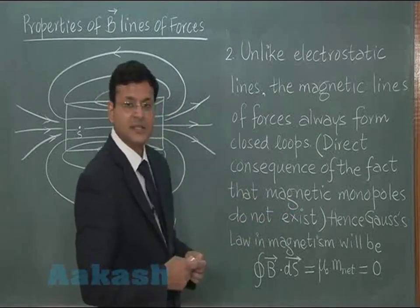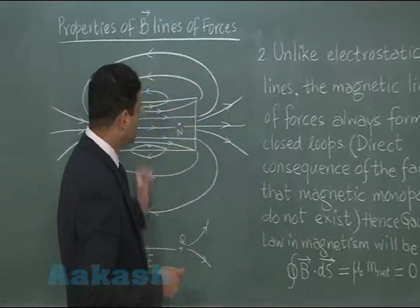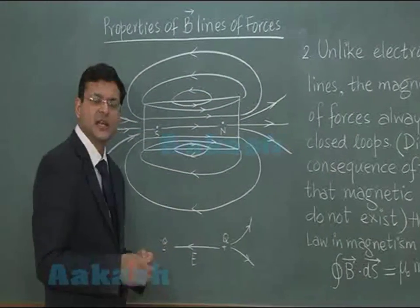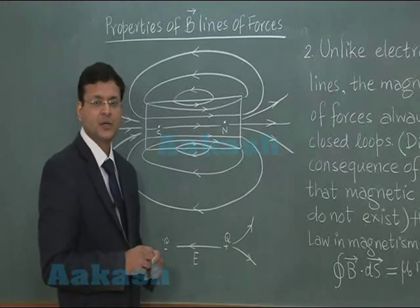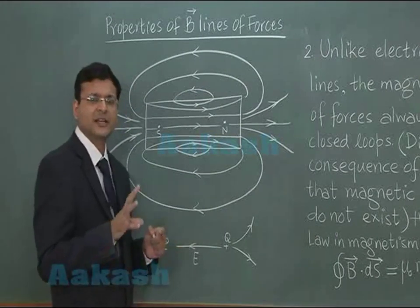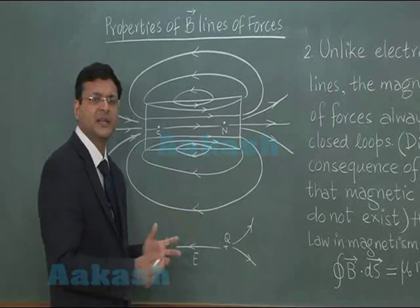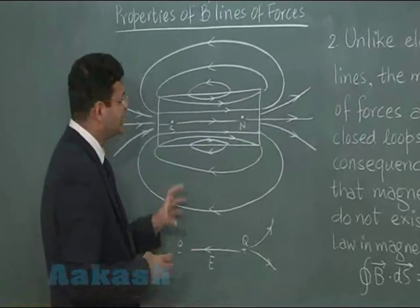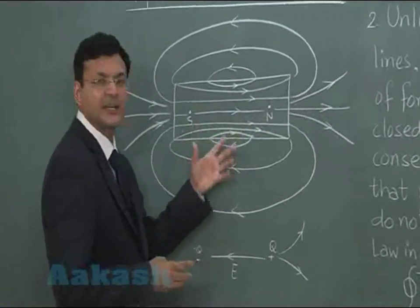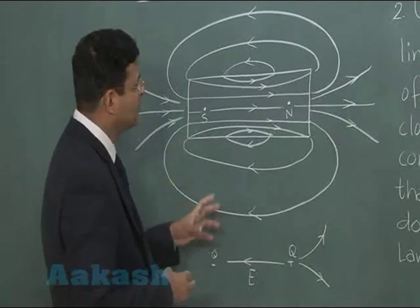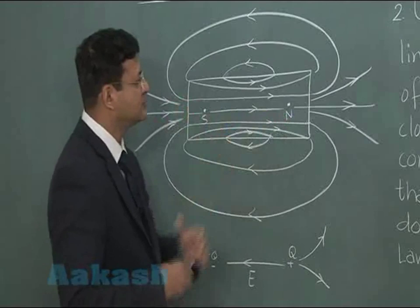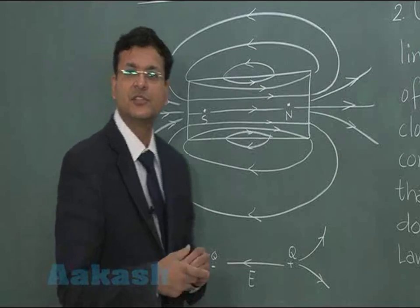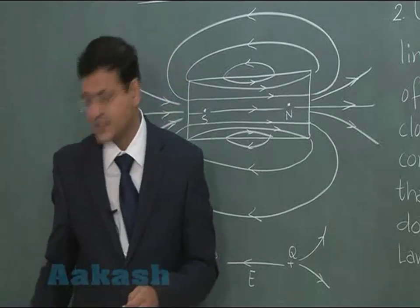Now let us discuss the third property. In electrostatics, electrostatic lines of forces never pass through the inside of a conductor. We had kept a conductor inside an electric field and found electric field zero inside, which is also called electrostatic shielding. But this kind of restriction is not there in magnetic field — you can find magnetic field existing inside a conductor.